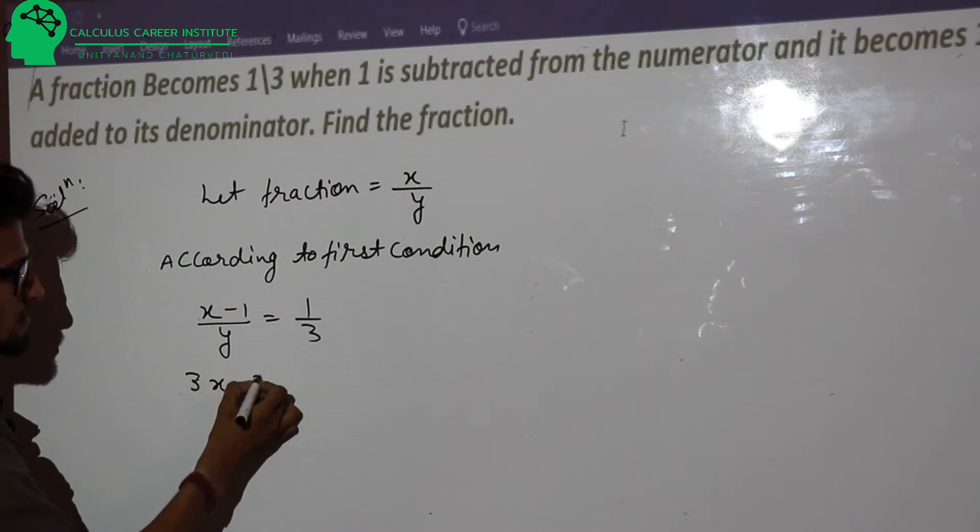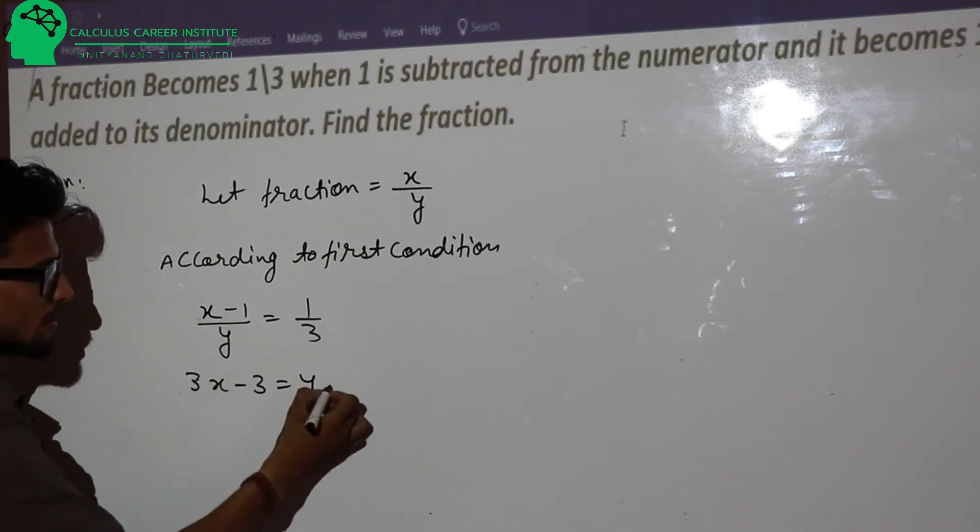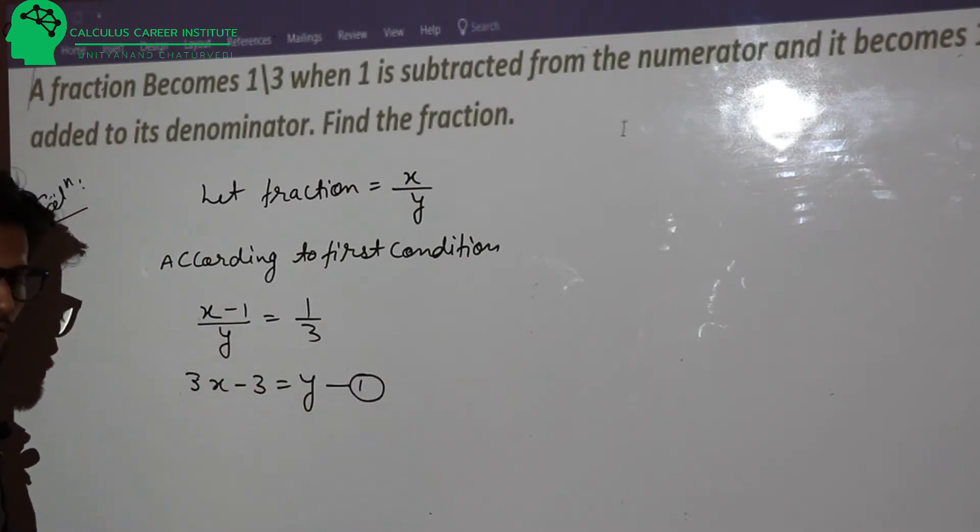So, 3x minus 3 equal to y. Let's take this as equation number 1.